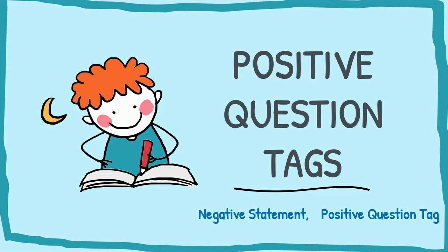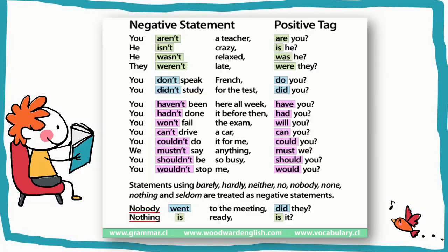Now we move to the form of positive question tags. If the statement is negative, then the question tag is positive. The first examples use the verb 'to be,' the next use auxiliary verbs 'have,' and also modal verbs. Remember, statements using 'barely,' 'hardly,' 'neither,' 'no,' 'nobody,' 'none,' 'nothing,' and 'seldom' are treated as negative statements.